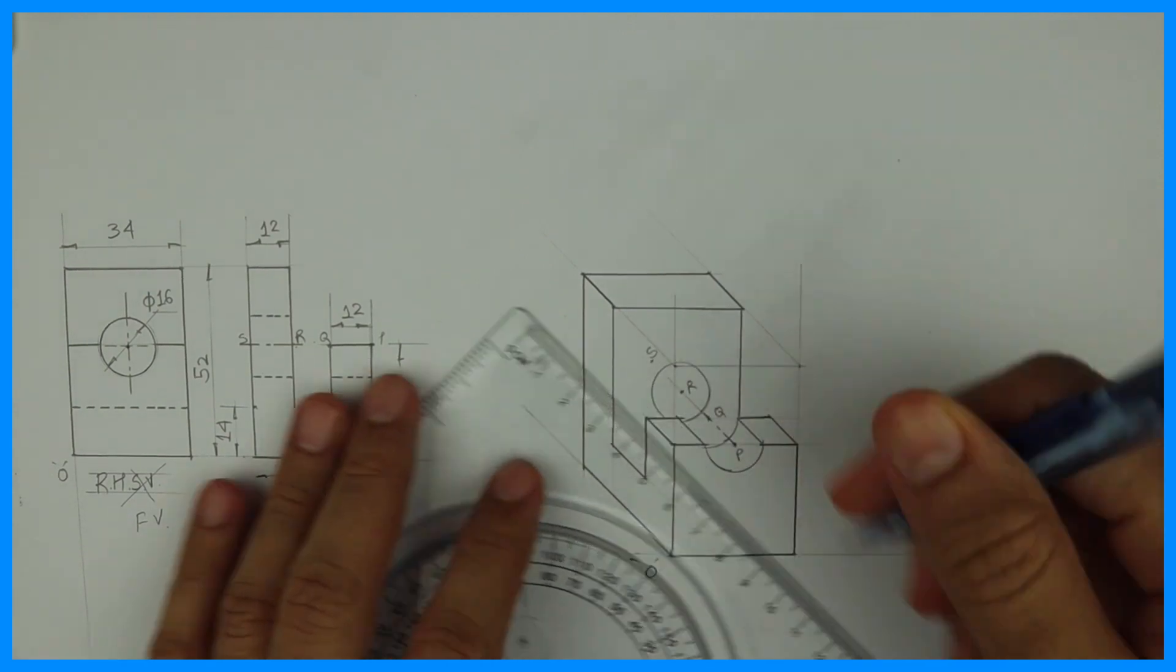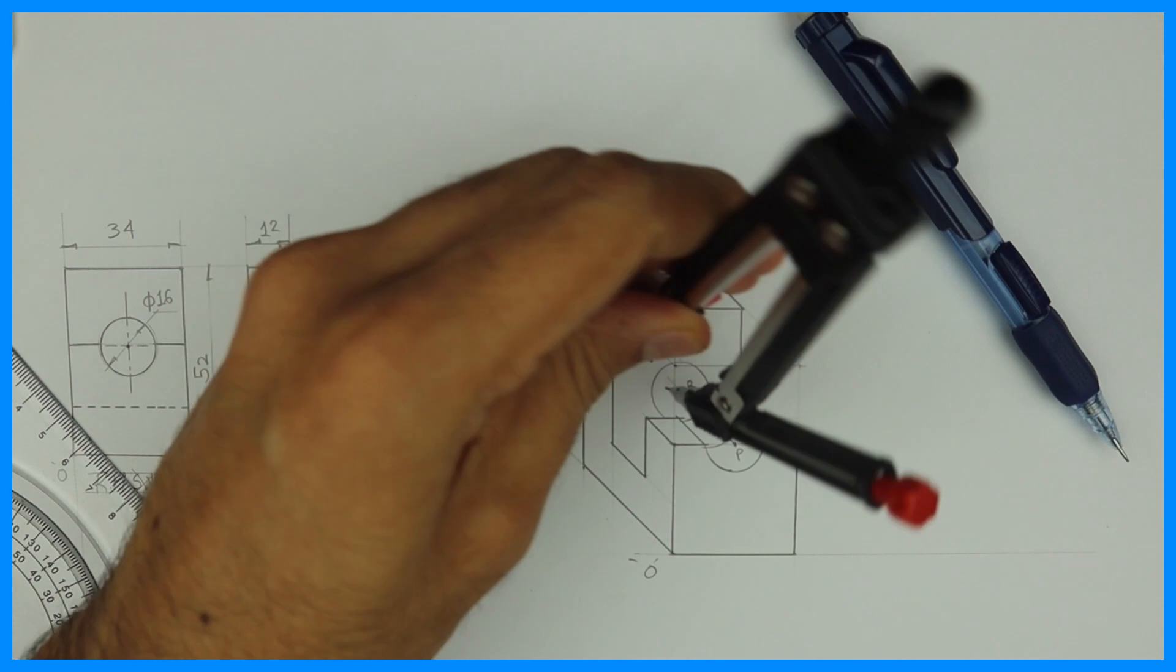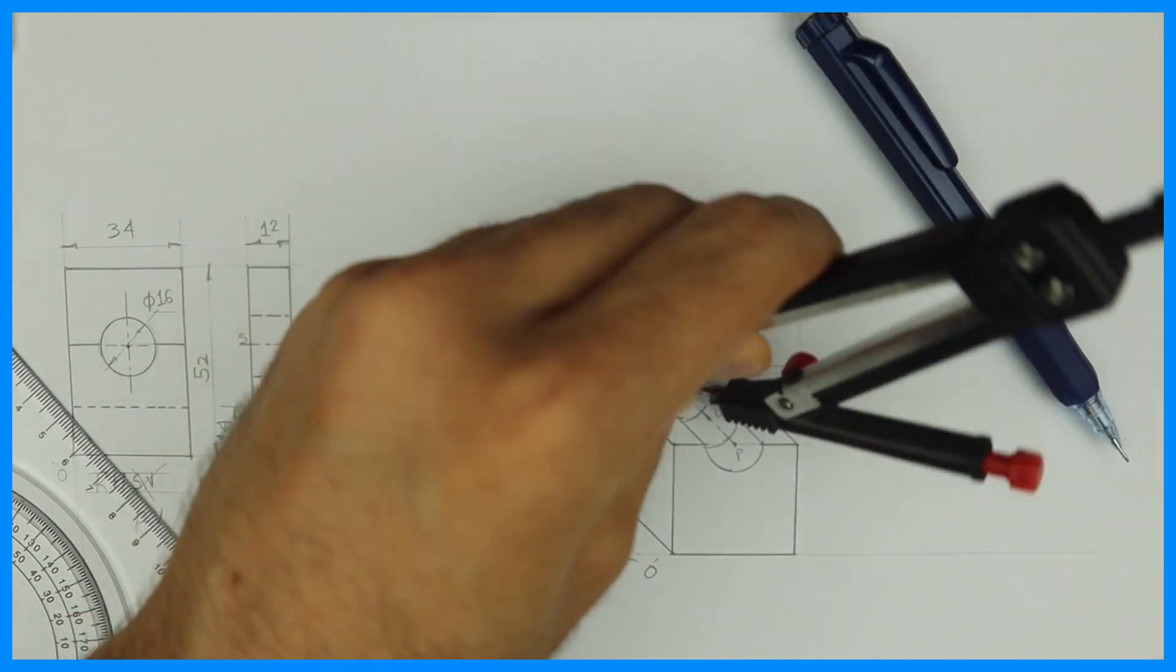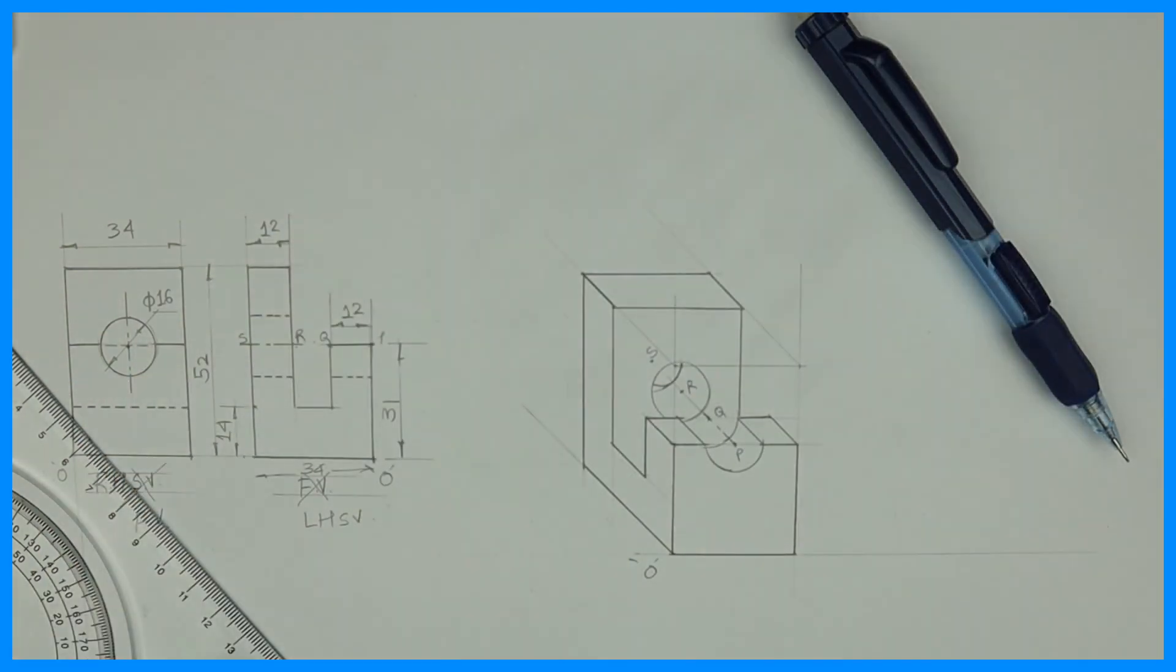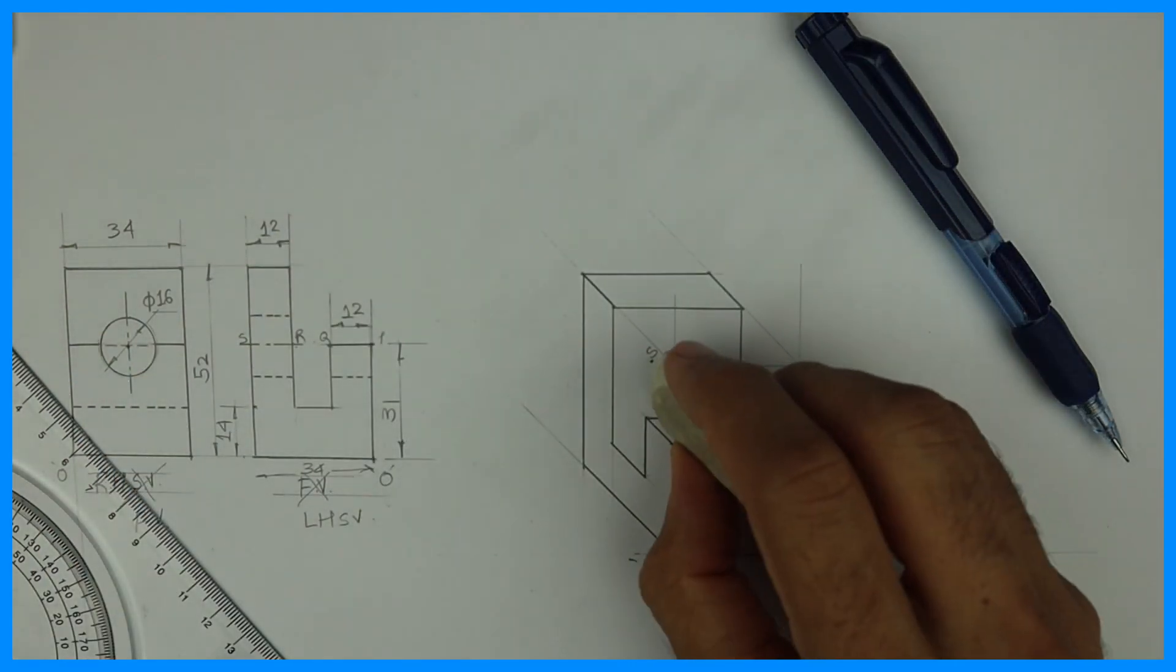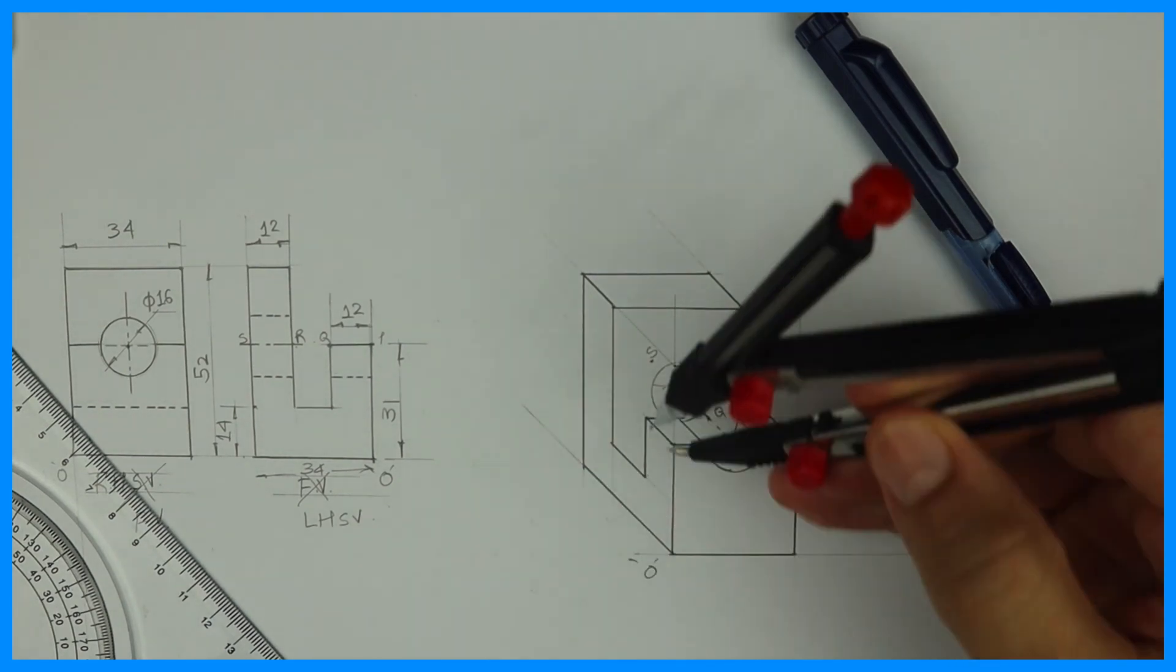So from R you'll go behind by 10. Then you'll have point S and from there we can draw radius 8 to draw full circle, the behind circle. So we are done with this sum, only one line is remaining.